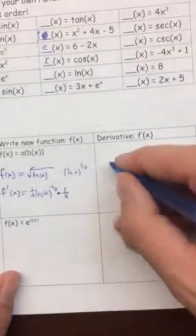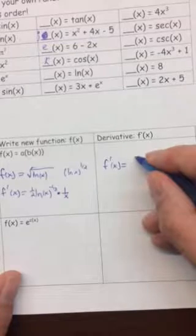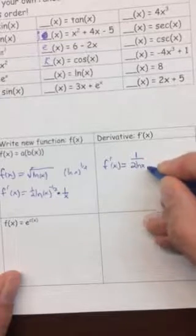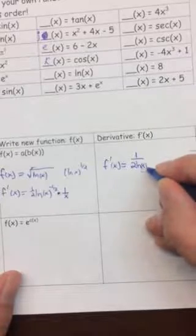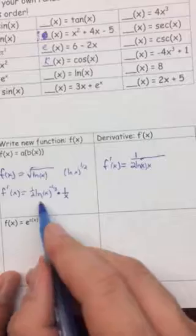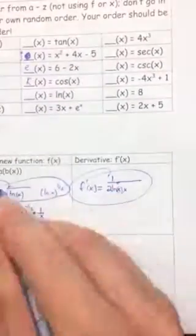So our derivative will be F prime of X will equal 1 over 2 natural log of X times X. That's what we get when we multiply this all together. And here's part B. Here's part A. That's what we've done.